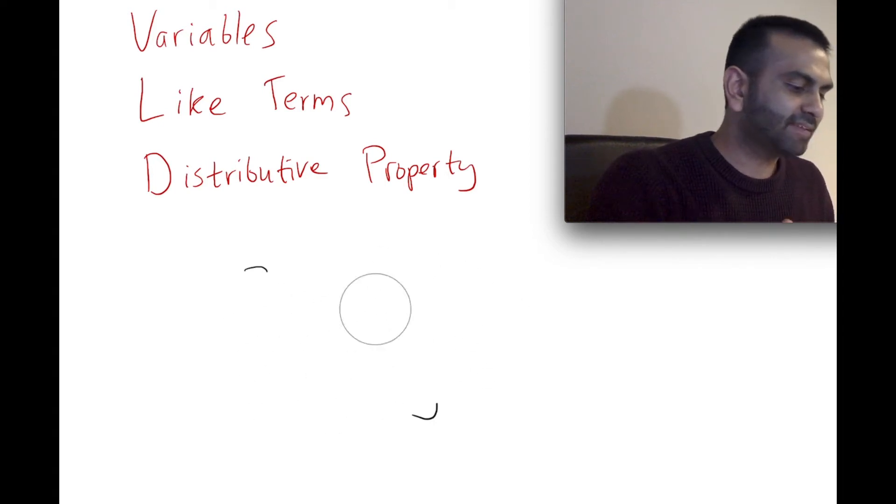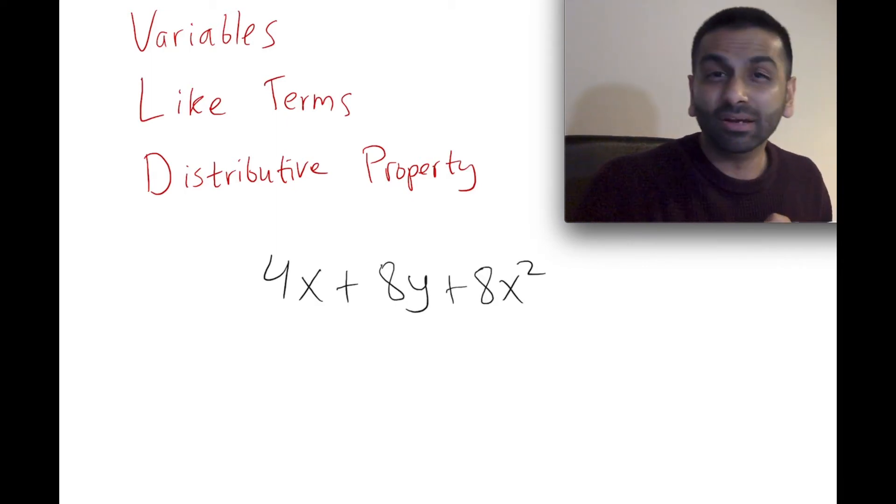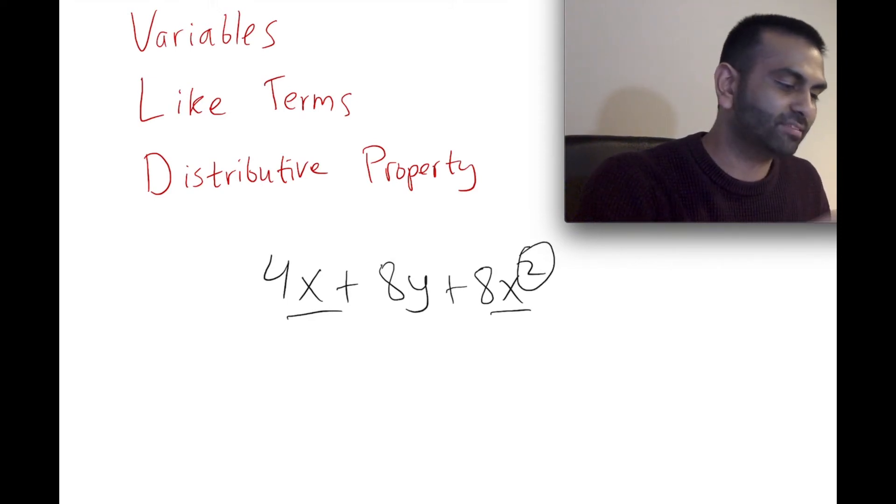If you had something to an exponent, for example 4X + 8Y + 8X², well now even though both of these have Xs, they're not the same term. They're unlike terms because they have a different exponent, and X² is different from X to the first power.